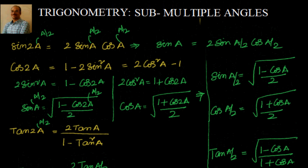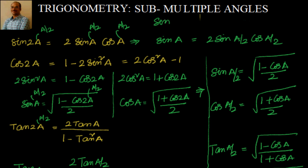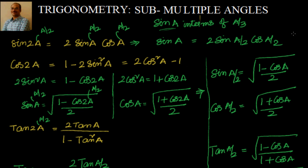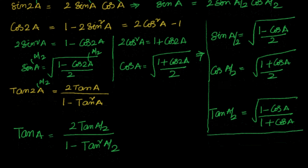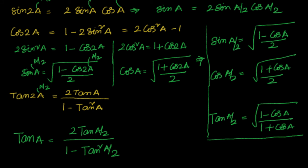These are the sub-multiple angles. Similarly, can you find sin a in terms of a/3? You know sin 3a = 3 sin a − 4 sin³a, so you can try that. This is about sub-multiple angles — very simple. If you know the multiple angles, suppose you know 2a, you divide by 2 and wherever you have 2a you make it a, so automatically a becomes a/2. Similarly, if you want a/2, make a as a/2.